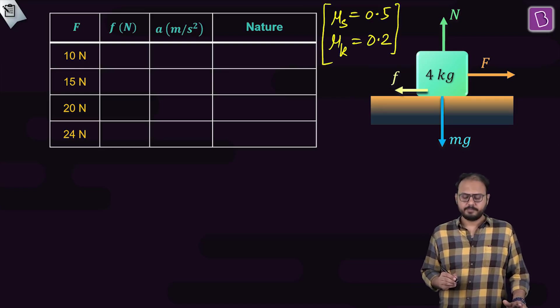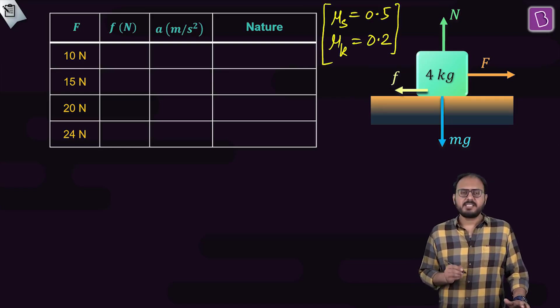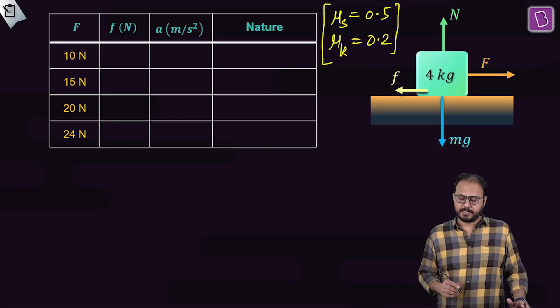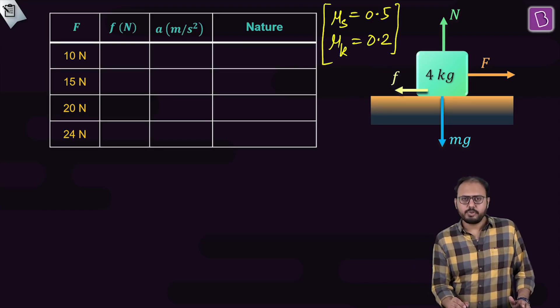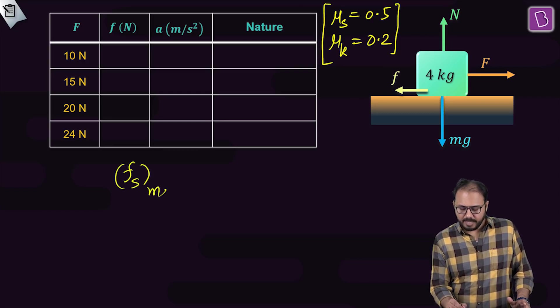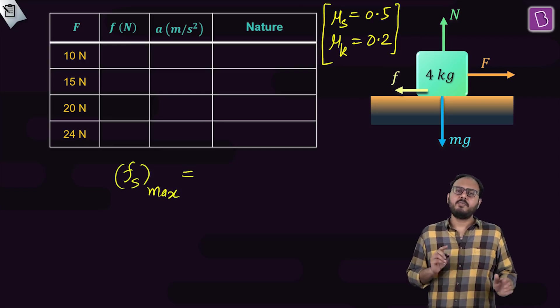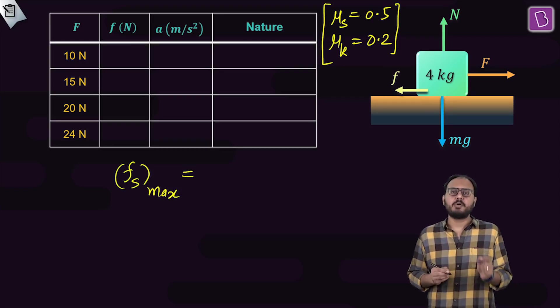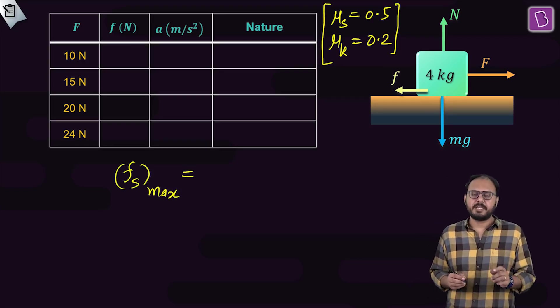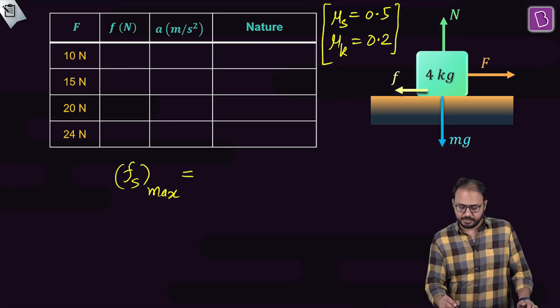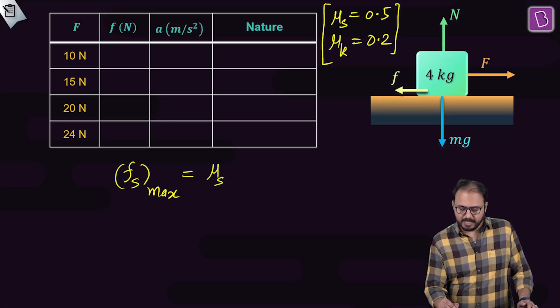Are you ready? What is the first thing you should do? The first thing you should do is always find out what is the maximum value of friction. Always find out the maximum value of limit of static friction. In other words, what do you call it? Limiting friction. Do you agree that the formula is μsN?